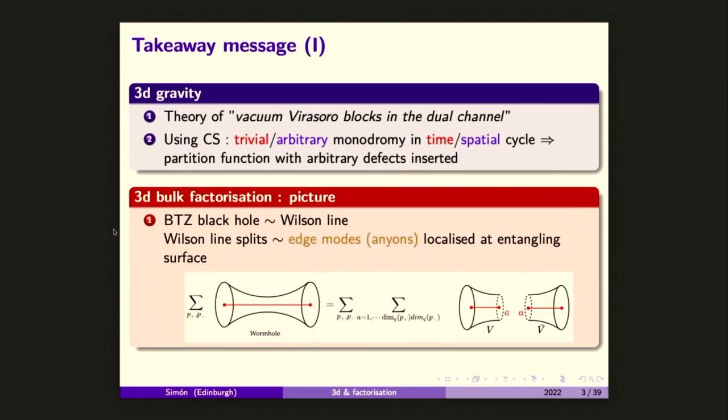Since I already know that I will be running out of time, and I've seen that some speakers have this great policy, let me tell you what is the takeaway message. From the 3D perspective, if you want to take a slogan: our proposal is that the JT analog of 3D is some theory of vacuum Virasoro blocks in the dual channel.